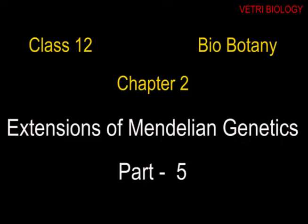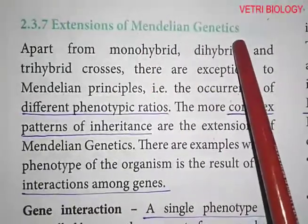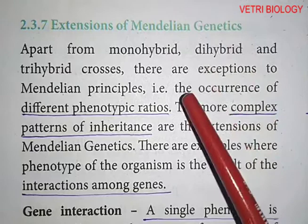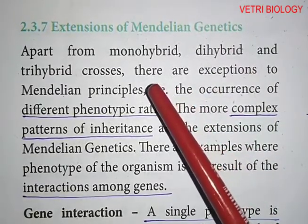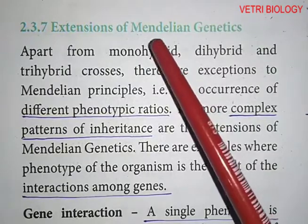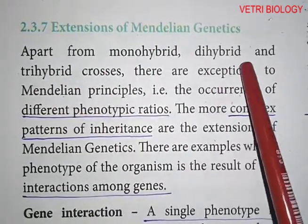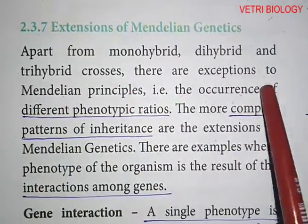Dear children, we have learnt monohybrid and dihybrid crosses from classical genetics in biobotany. Now let us learn the extensions of Mendelian genetics. Extensions are the exceptions of Mendelian principles. Apart from monohybrid, dihybrid and trihybrid crosses, there are exceptions to Mendelian principles.